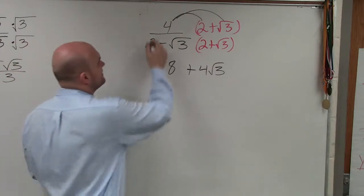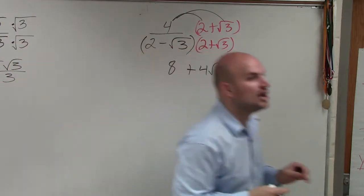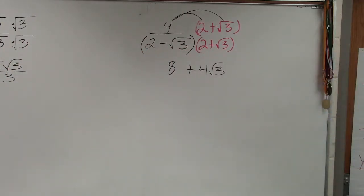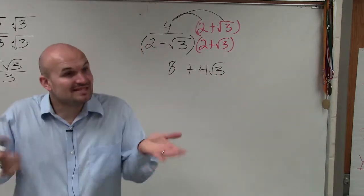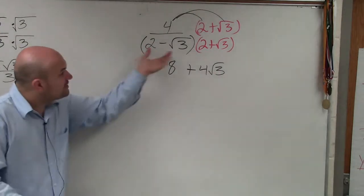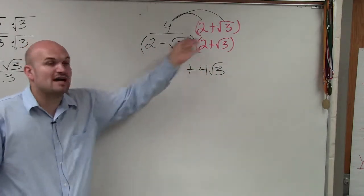In the denominator, this is an example of—rhymes with preference of two pairs—the difference of two squares. All the terms are exactly the same; one's subtraction, one's addition.